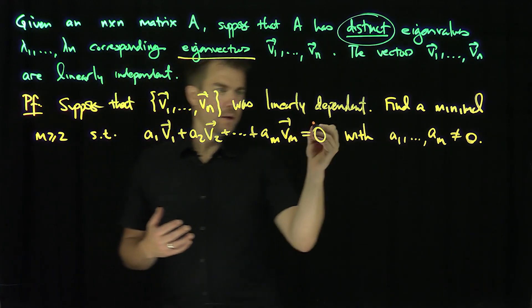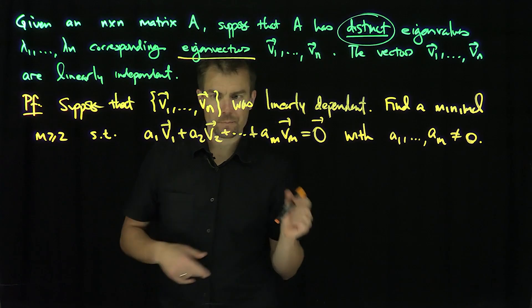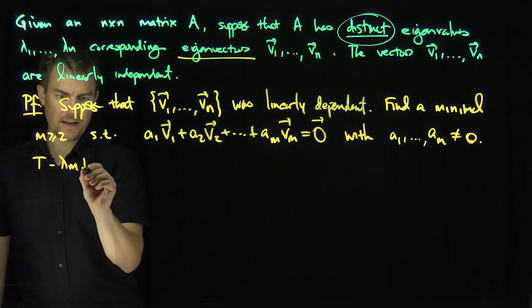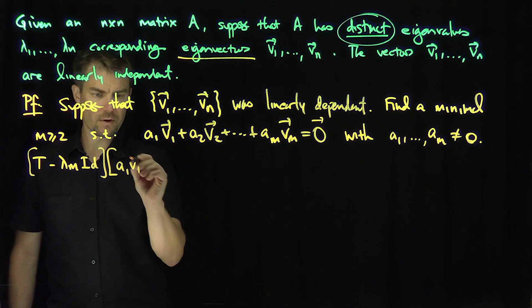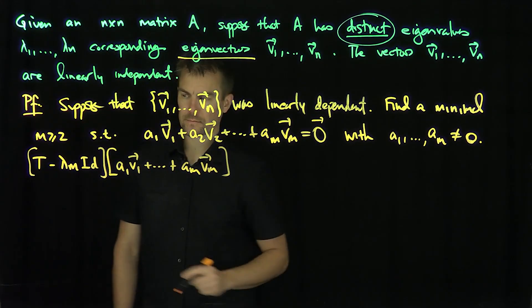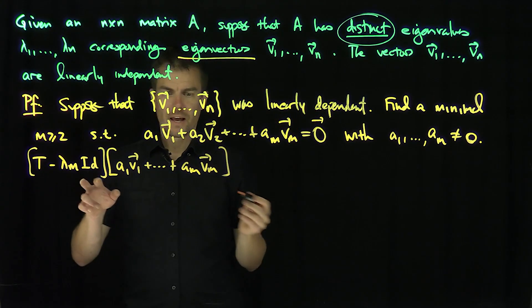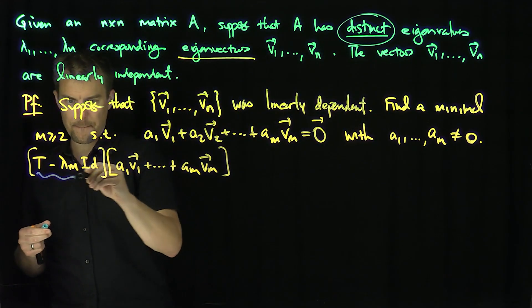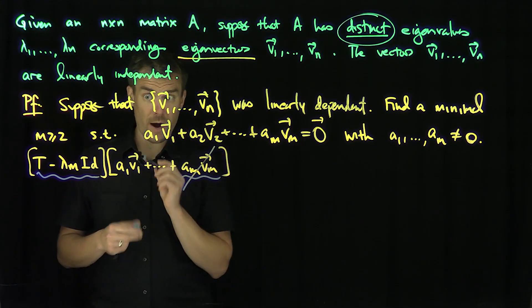What I want to do with this expression is apply T minus lambda_m times the identity to it. So (T - λm·I) applied to a1*v1 + ... + am*vm. We can see that the last term am*vm is going to cancel out immediately by linearity, since (T - λm·I) applied to am*vm gives zero.